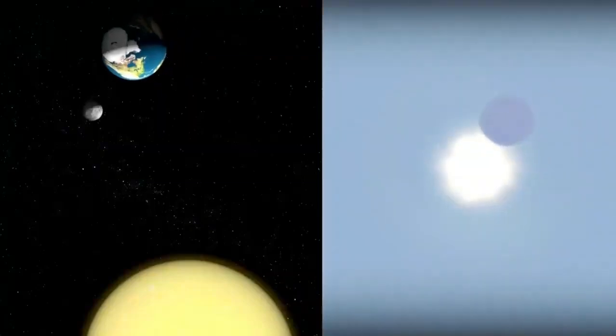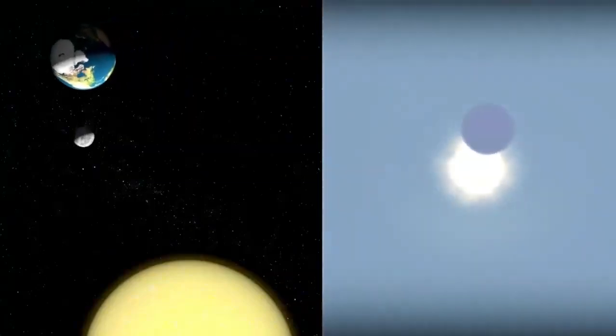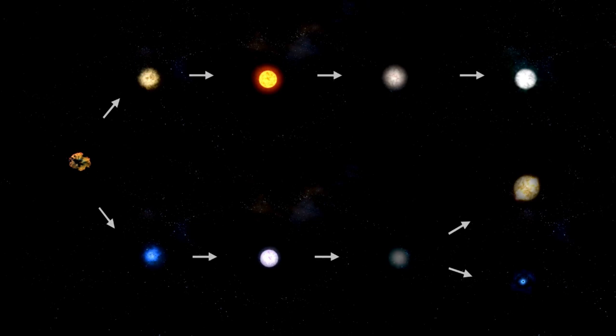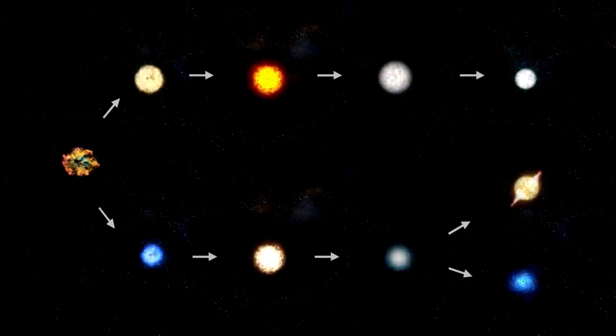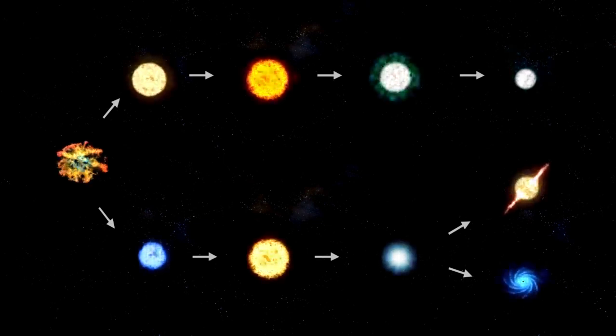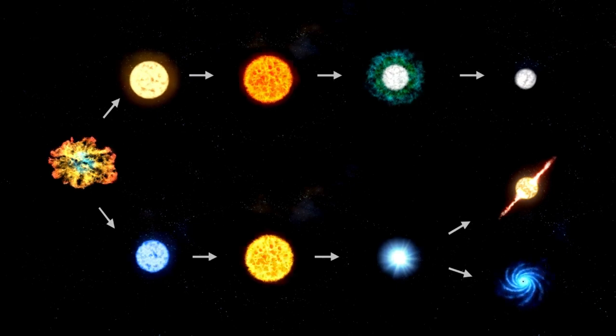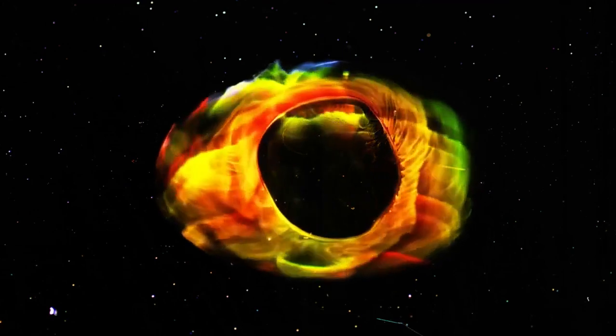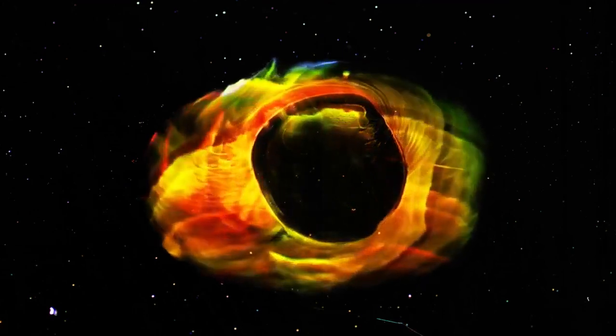It's categorized as a red supergiant, belonging to one of the universe's largest and most massive types of stars. Its immense size dwarfs our sun, making it a stellar giant of unmatched proportions. Betelgeuse's peculiar behavior and unique traits have captivated astronomers and stargazers for centuries.